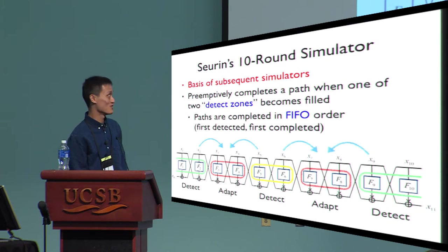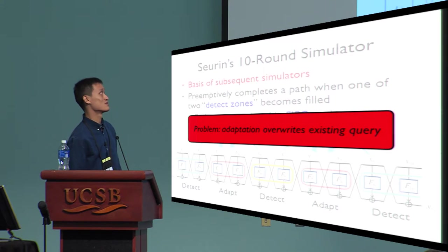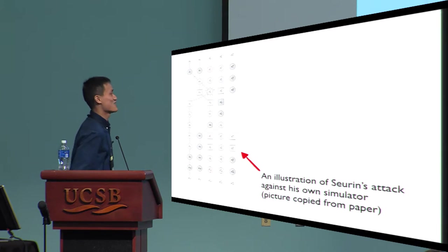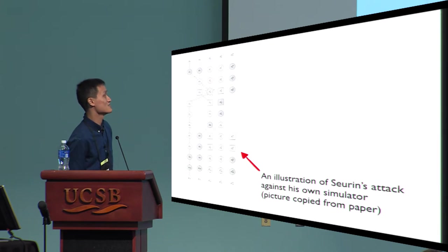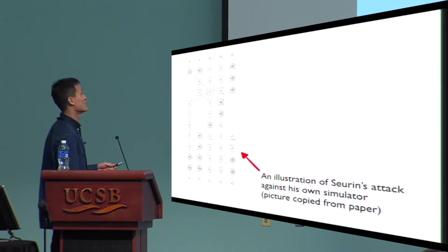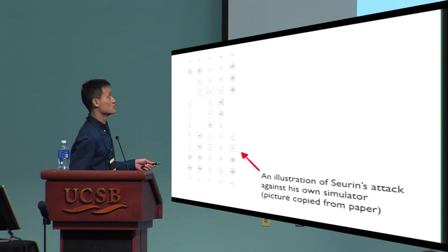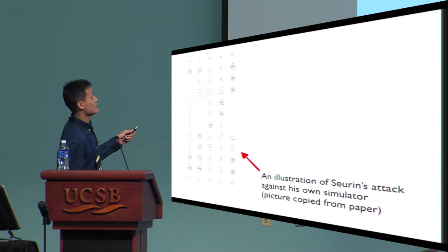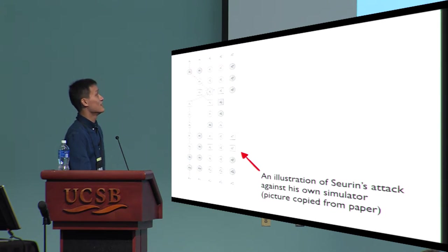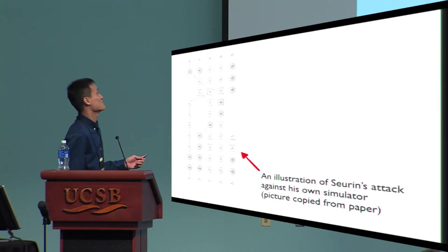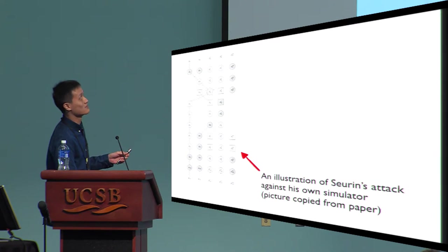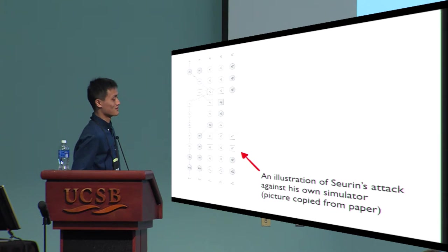This is Seurin's 10-round simulator. Its problem is that there is a strategy for the distinguisher that causes the simulator to always attempt to adapt an already-defined query. This is Seurin's attack against his own simulator, which is quite complicated. The key idea is that the randomness determining an adaptive query is sampled long before the query is actually adapted. Therefore, some other path has already used the same randomness and defined that query beforehand.